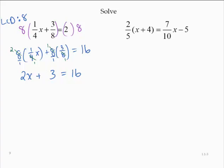Now from here, subtracting 3 from both sides yields 2x equals 13. And dividing by 2, x is equal to 13 halves. Or if you want a decimal number, 6.5.